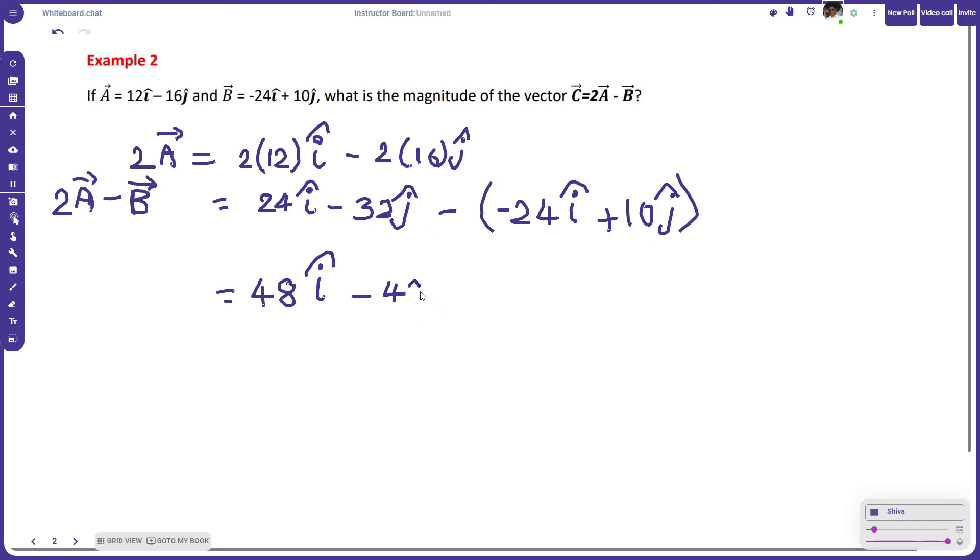minus 42j cap. Now the important thing here is they are asking for the magnitude of the vector. So what is the magnitude? This is vector c. If you want the magnitude of c,